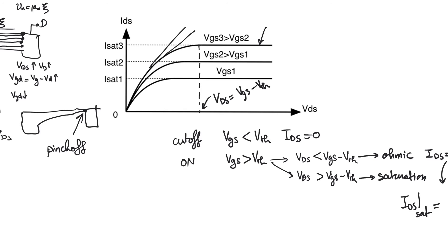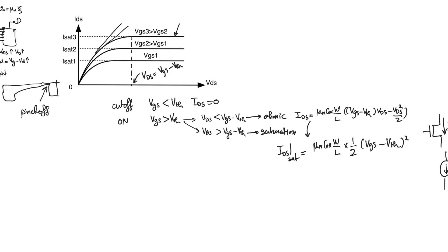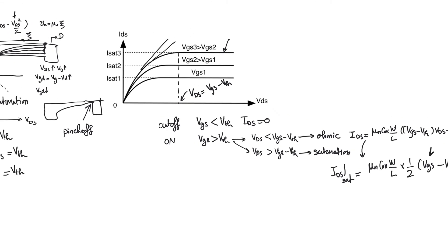Each curve on the graph is drawn for a different level of V_gs. From the saturation current expression, current is only a function of V_gs — a higher V_gs leads to more saturation current, so V_gs3 > V_gs2 > V_gs1. In the ohmic regime, current is a function of both V_gs and V_DS. Increasing V_gs increases Q (charge), giving higher current, while sweeping V_DS increases velocity, also raising current.